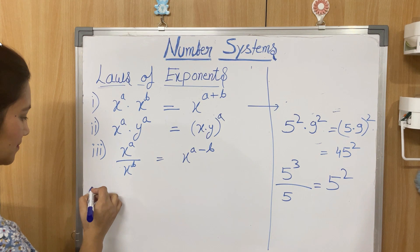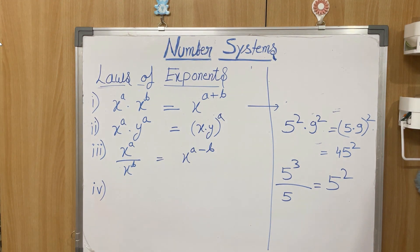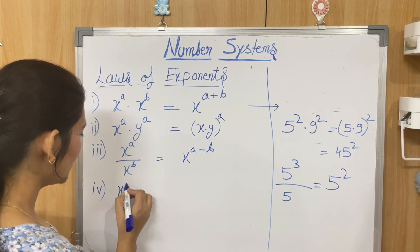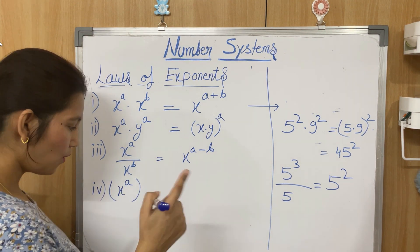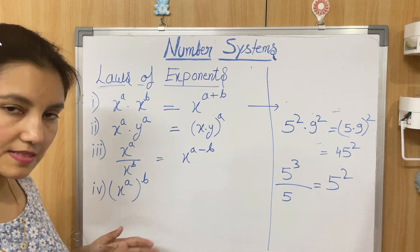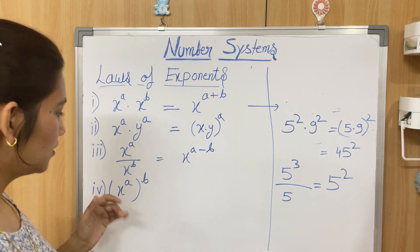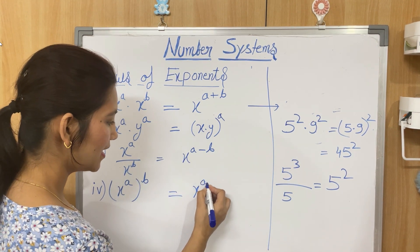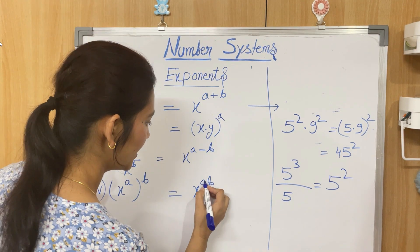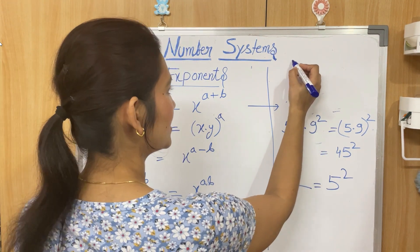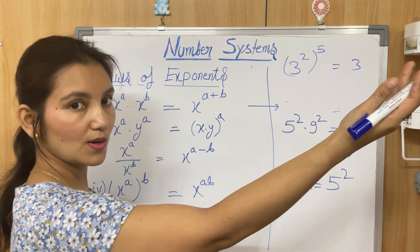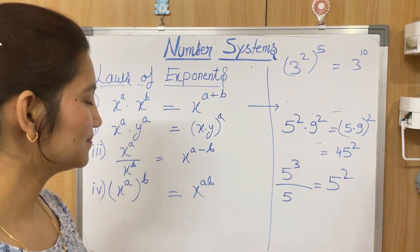The fourth law of exponents: (x^a)^b — x to the power a, whole raised to the power b. In this case, the powers get multiplied: x^(a×b) = x^(ab). For example, (3²)^5 = 3^(2×5) = 3^10. This is the fourth law of exponents.